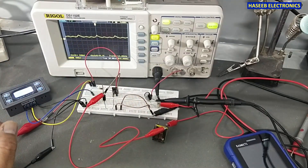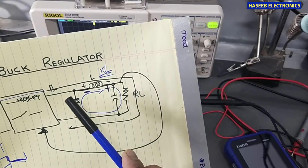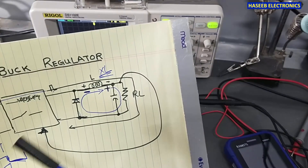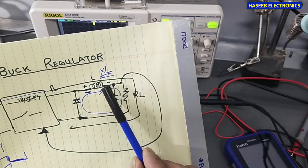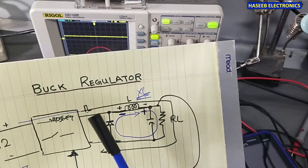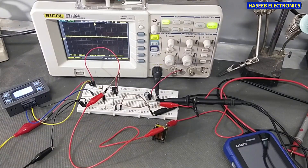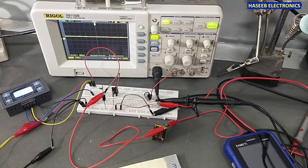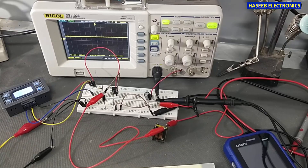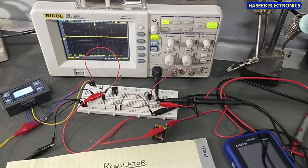If we add a capacitor for charging, the load receives regulated voltage. This is how the inductor and diode work together — as a low-pass filter that clips off the ripples. I hope this video is informative. If it is, please hit the like button, and if you have any questions, write them in the comments. Thanks for watching. Assalamu alaikum warahmatullahi wabarakatuh.